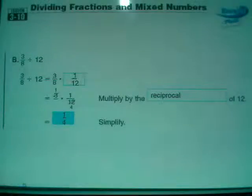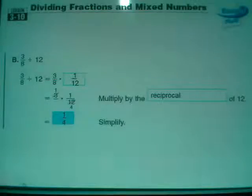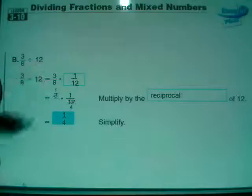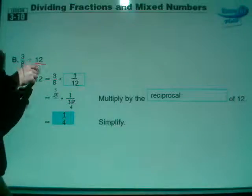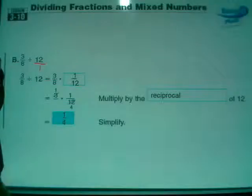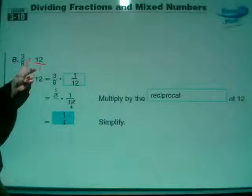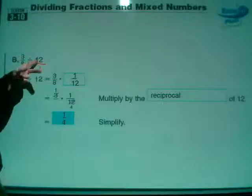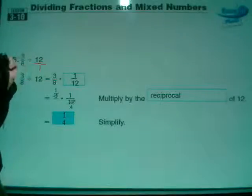Here's 3 eighths divided by 12. The only reason this question is here is they want to make sure that you write 12 as a fraction. So you want to write 12 as 12 over 1 before you start doing the steps. Once you have it as 12 over 1, then carry through the steps. Change this to multiplication and flip this fraction around so it says 1 over 12.